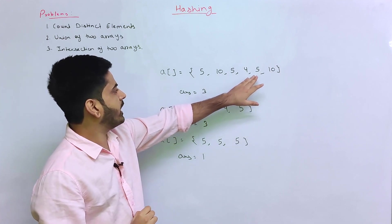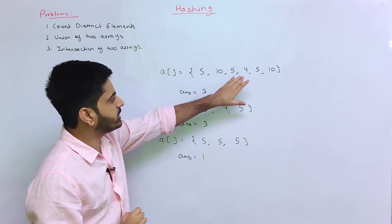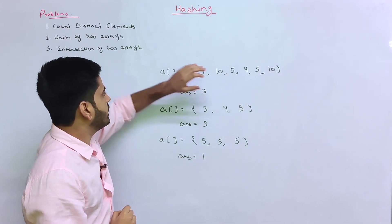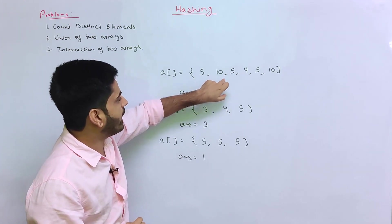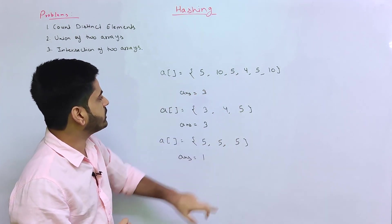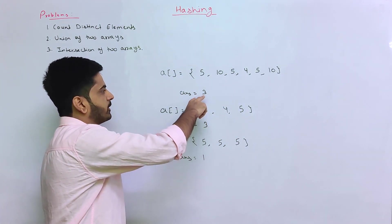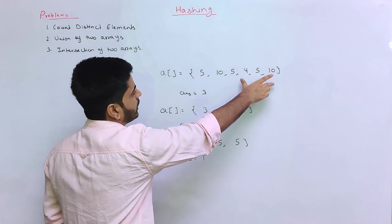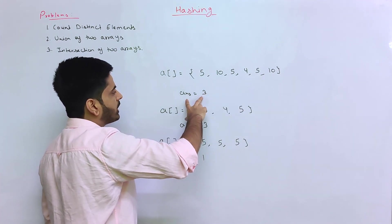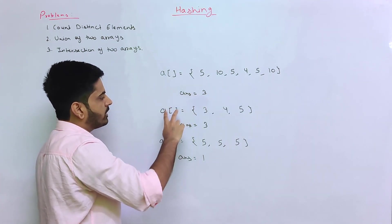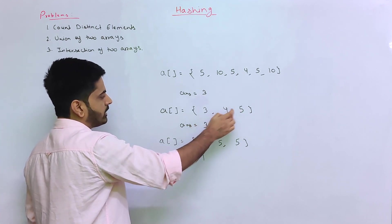In this question, you can tell how many elements there are. In this example, 5, 10 and 4 are three distinct elements, so the answer is 3. 5 repeats three times and 10 repeats two times, but the number of distinct elements is 3. If you look at another example with elements 3, 4, and 5 — there are three distinct elements, so the answer is 3.